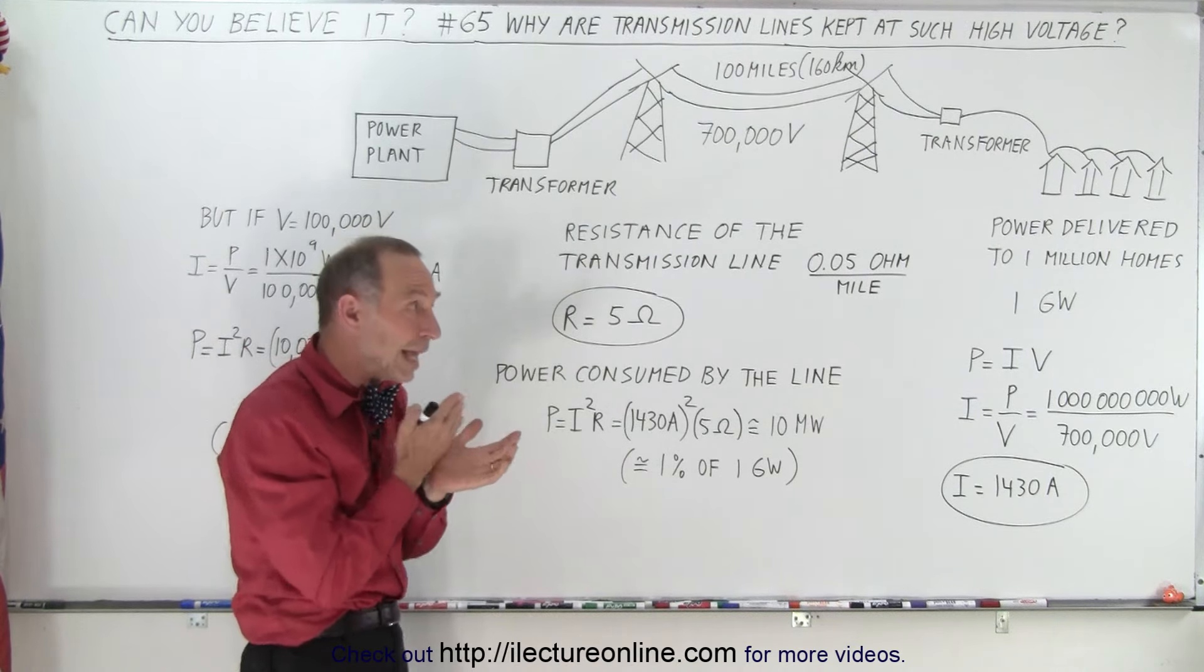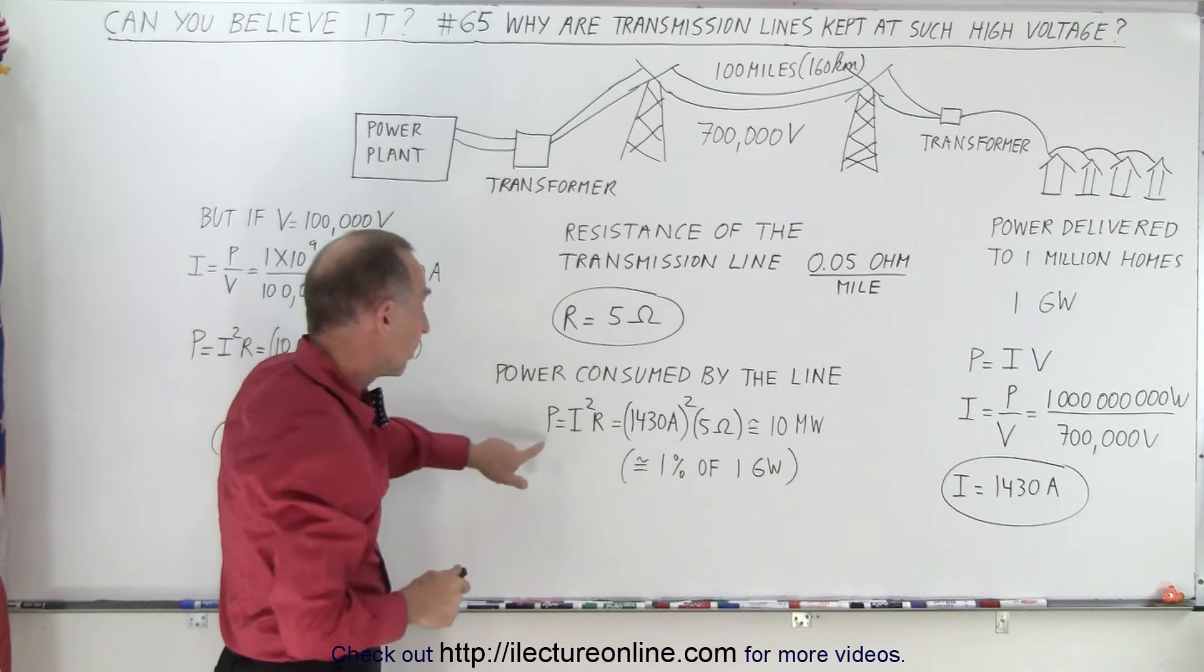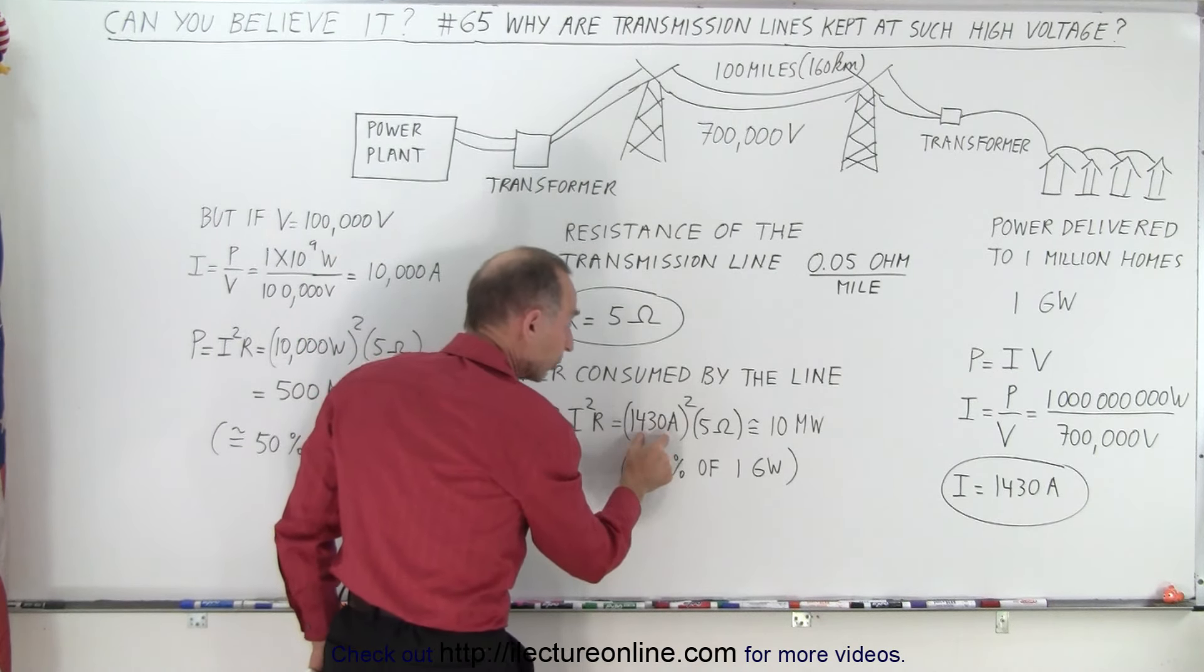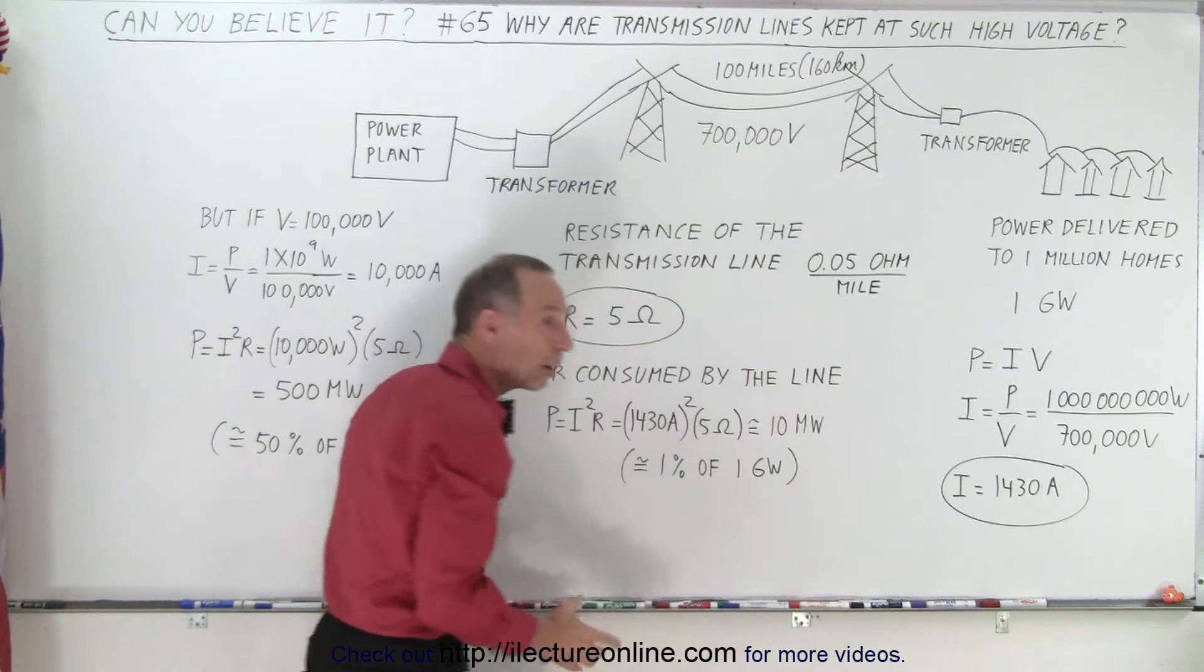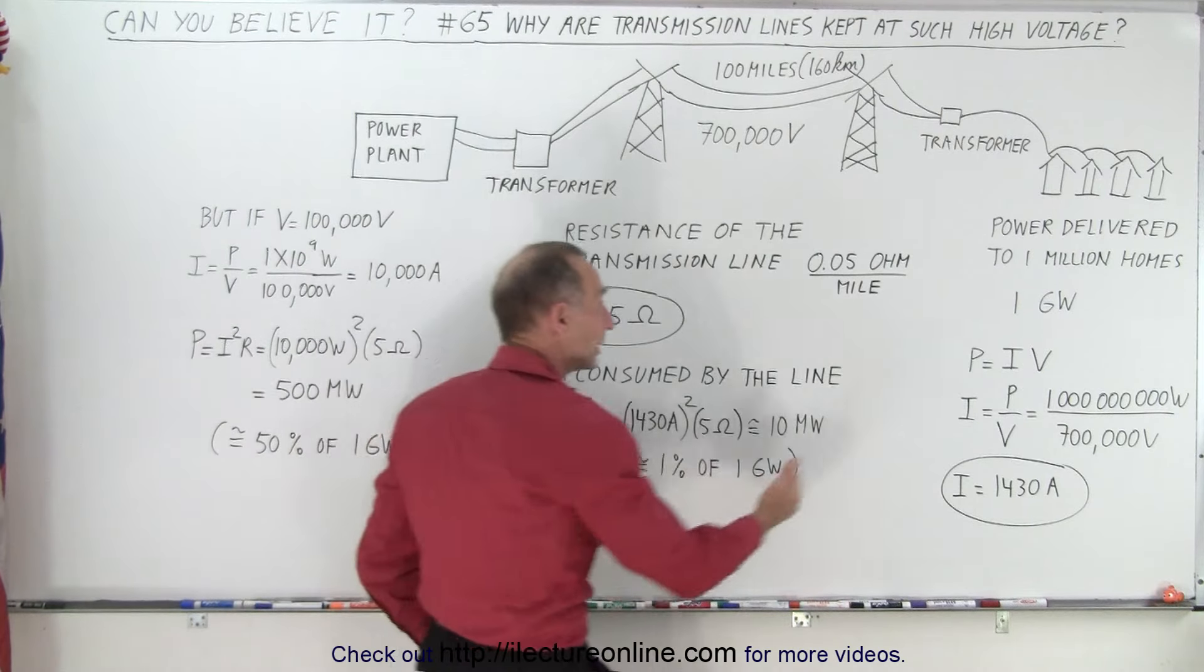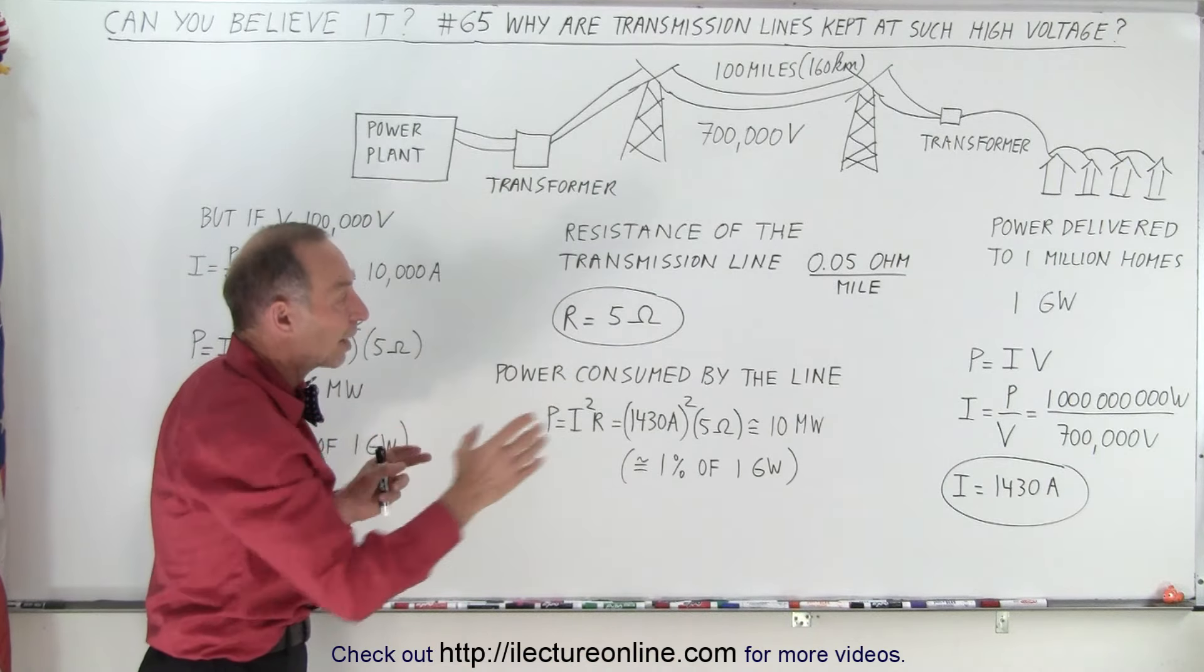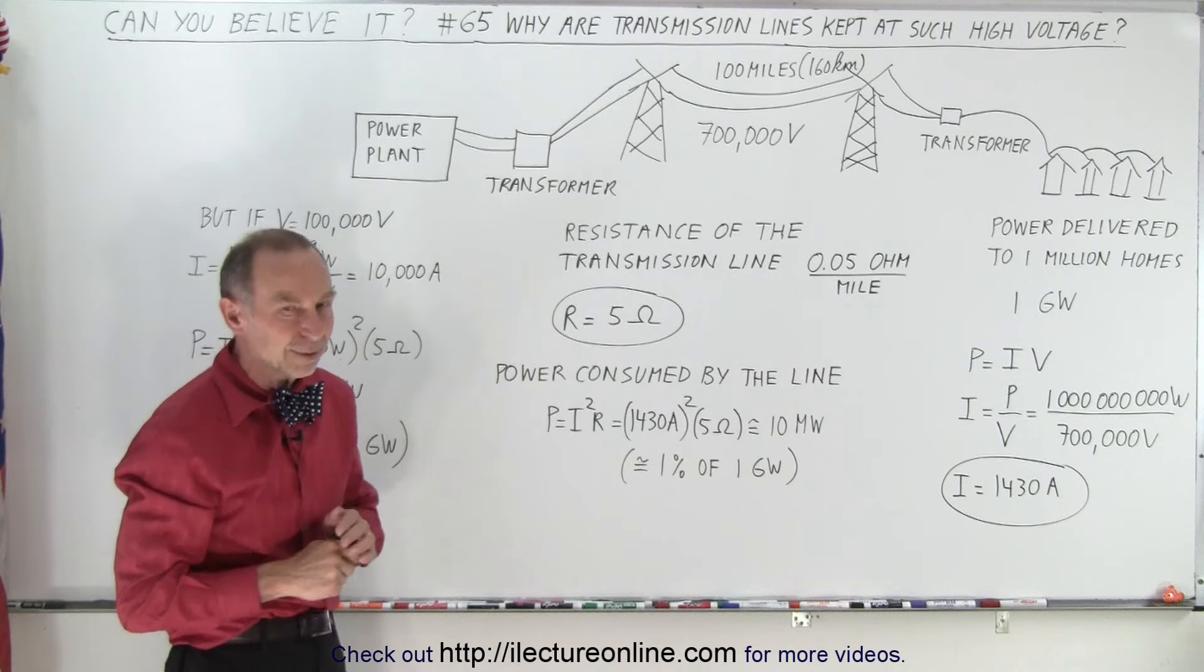Now how much power do they consume by sending the power along those transmission lines? Well the power consumed equation is I squared times R, so we square the amps, the current, times the resistance, and we get 10 megawatts of power lost just in the transmission. But since we're delivering one gigawatt, that's only about 1% loss, so you still get 99% of the power to the houses and you only lose about 1% of power along the transmission lines.